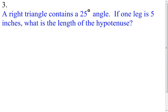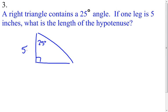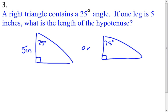A right triangle contains a 25-degree angle. If one leg is 5 inches, what is the length of the hypotenuse? This one is a little tricky because there's actually more than one answer. The problem is: does the 5 inches go on the side adjacent to the 25-degree angle, or the side opposite to it? The problem doesn't tell you, and that's why there actually has to be two answers in this case.